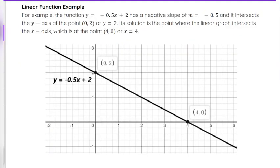Taking a look at an example, the function y = -0.5x + 2 has a negative slope of m = -0.5. We'll talk about what that means, but a negative slope goes down from left to right on the graph.